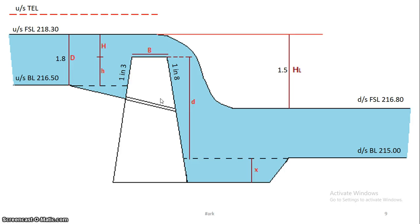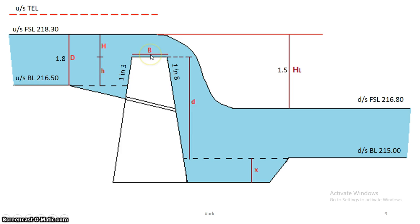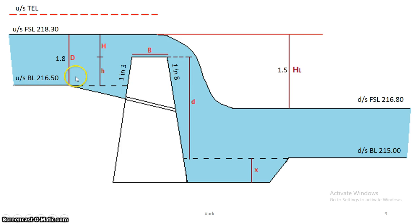Looking at the figure notations: the bed level is 216.5, the FSL is 218.3, and the full supply depth is 1.8 m. Bed level plus full supply depth equals full supply level. The full supply depth is denoted as capital D. The crust wall top width is denoted capital B. On the downstream side the bed level and FSL are also marked. Capital H is the depth from the upstream FSL to the top of the crust wall.